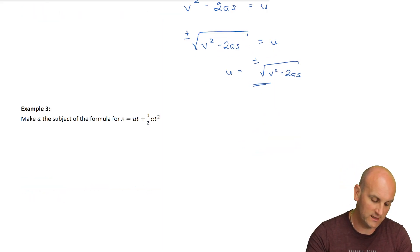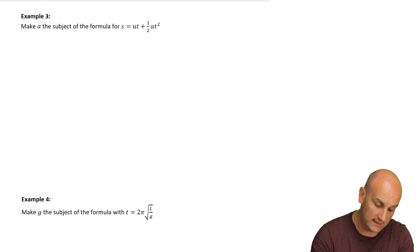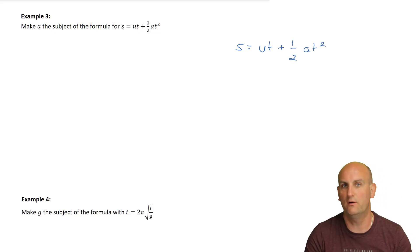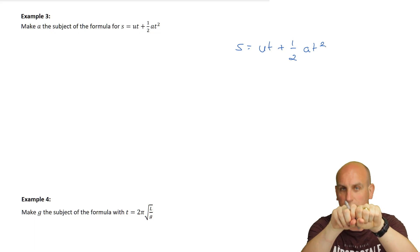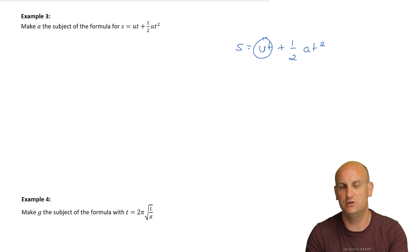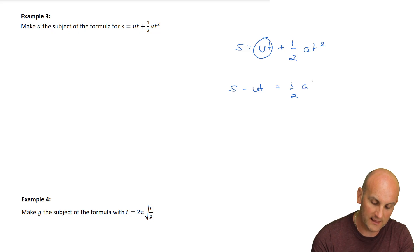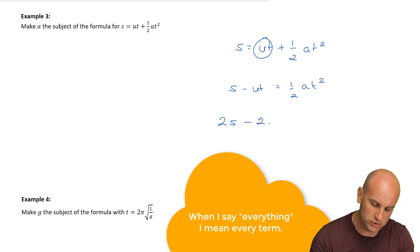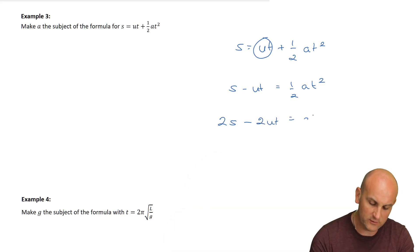Make A the subject of the formula for that. Right, okay. So I've got S is equal to U T plus a half A T squared. No, an A. Right, I've got a half and a T squared stuck together. I'm going to leave it. I'm going to move my U T first. I'm going to subtract U T from both sides. So S minus U T is equal to a half A T squared. Right, what's the next step? Well, the next step for me would be get rid of that half. How do you get rid of a half? You double absolutely everything. A half is just divide by two. So how do I undo divide by two? I double. I double absolutely everything. So the two multiply the S becomes two S minus two U T is equal to A T squared.